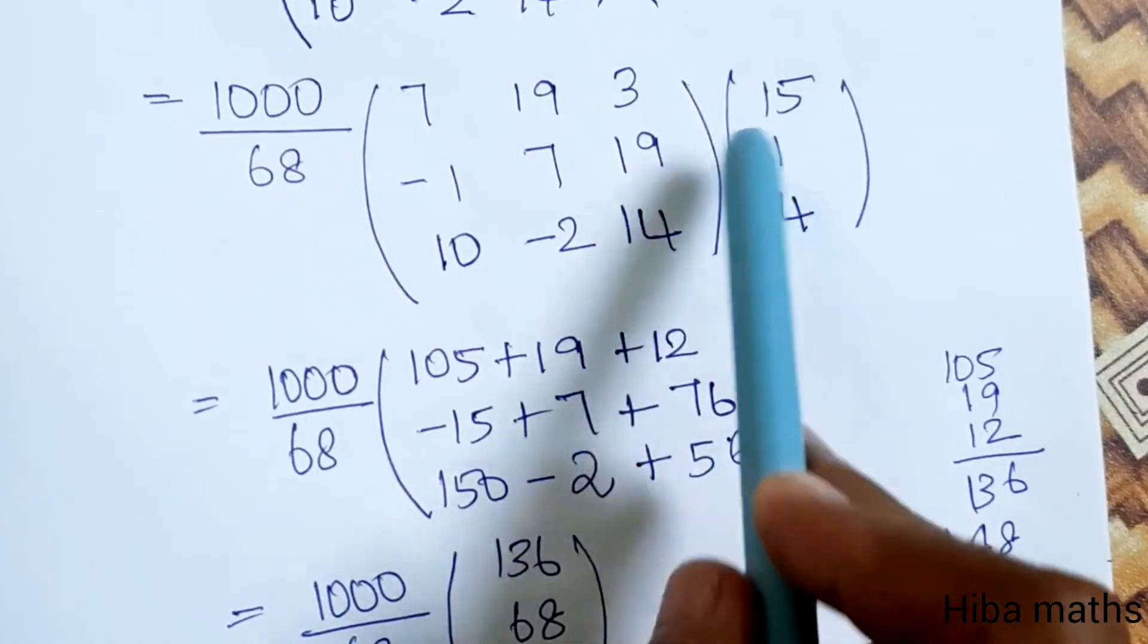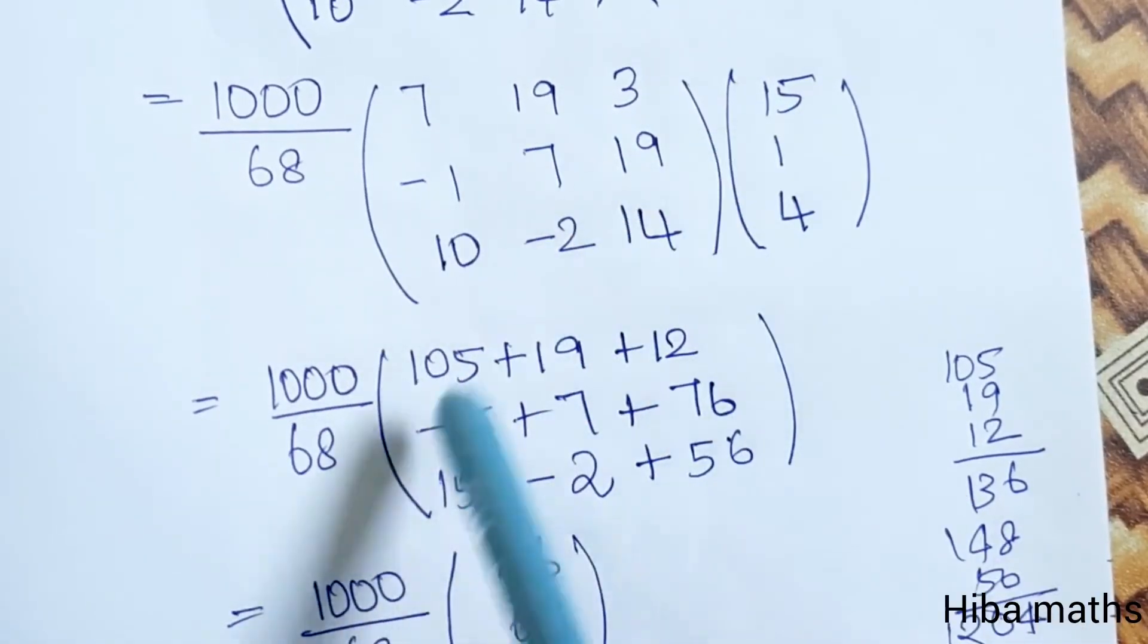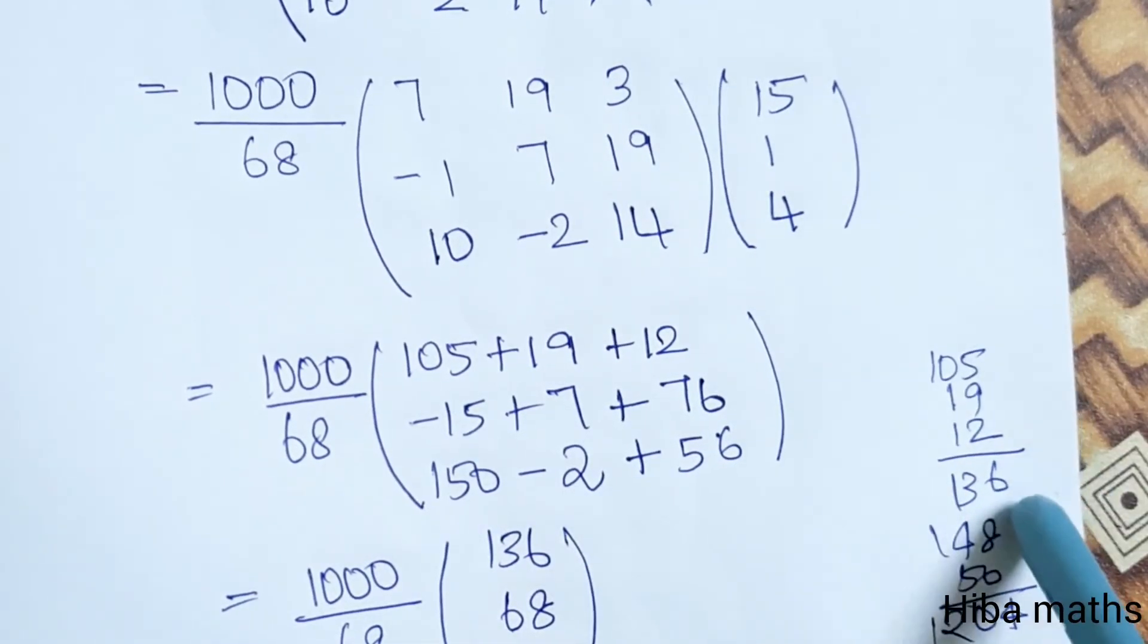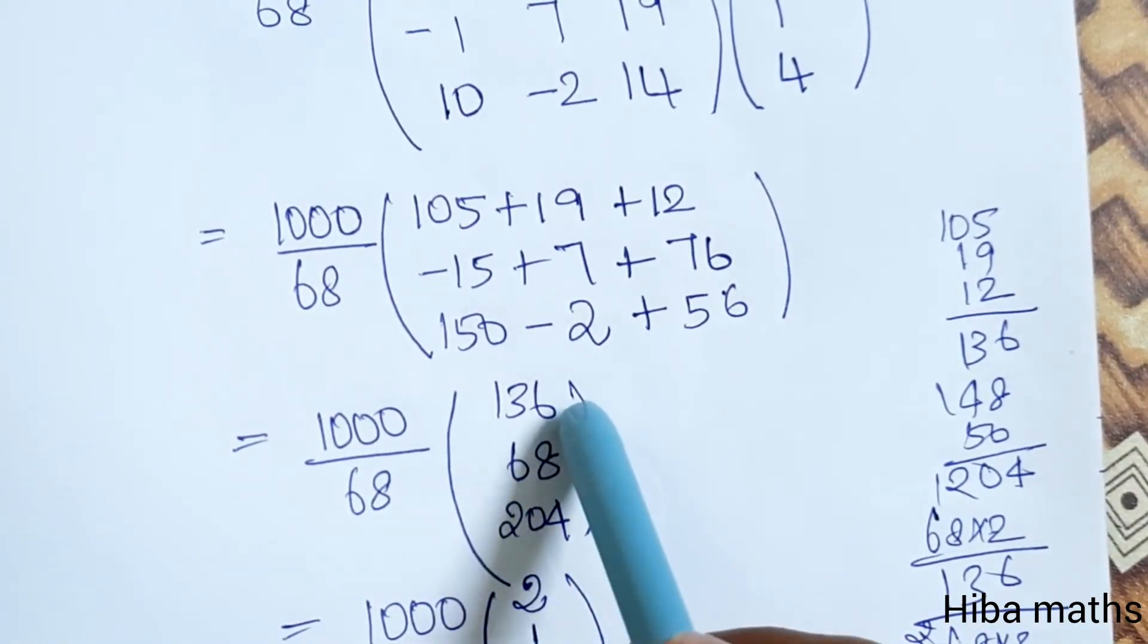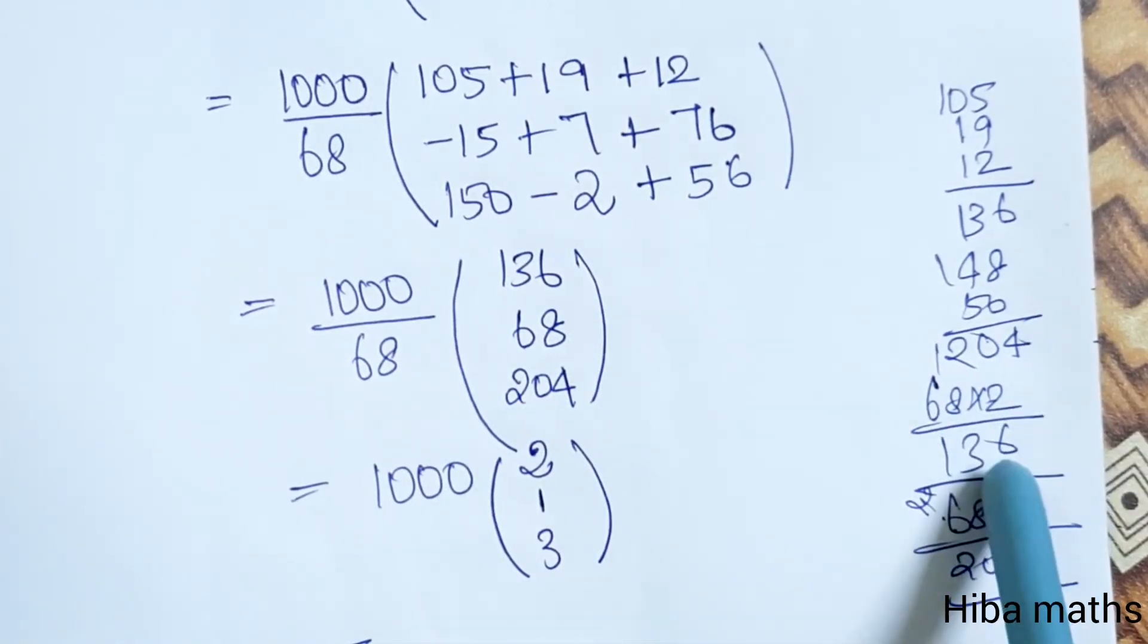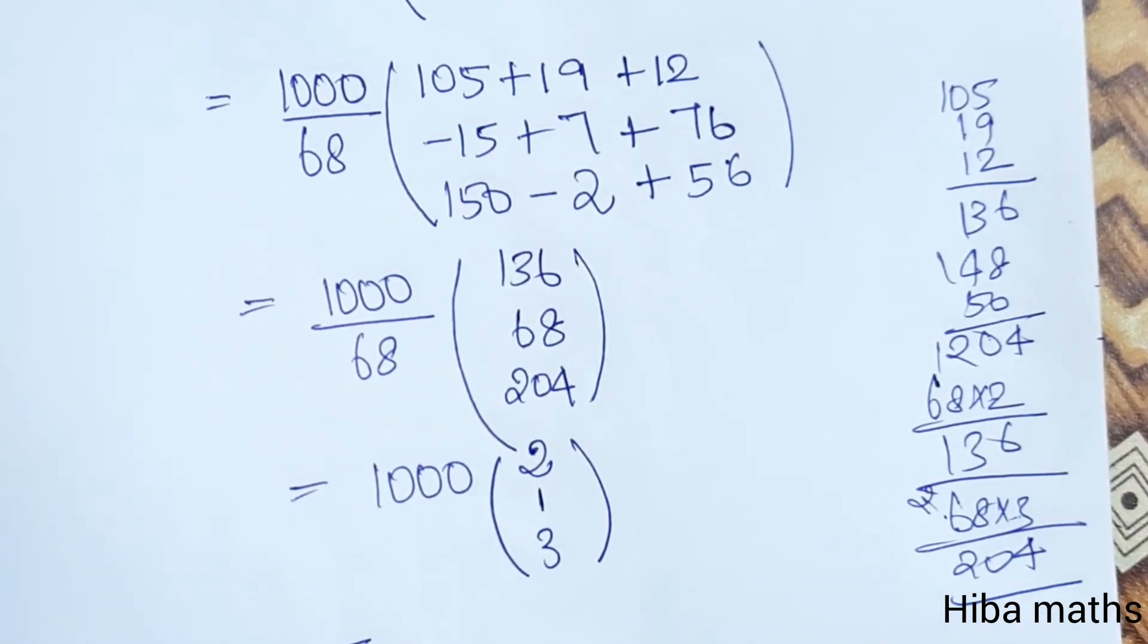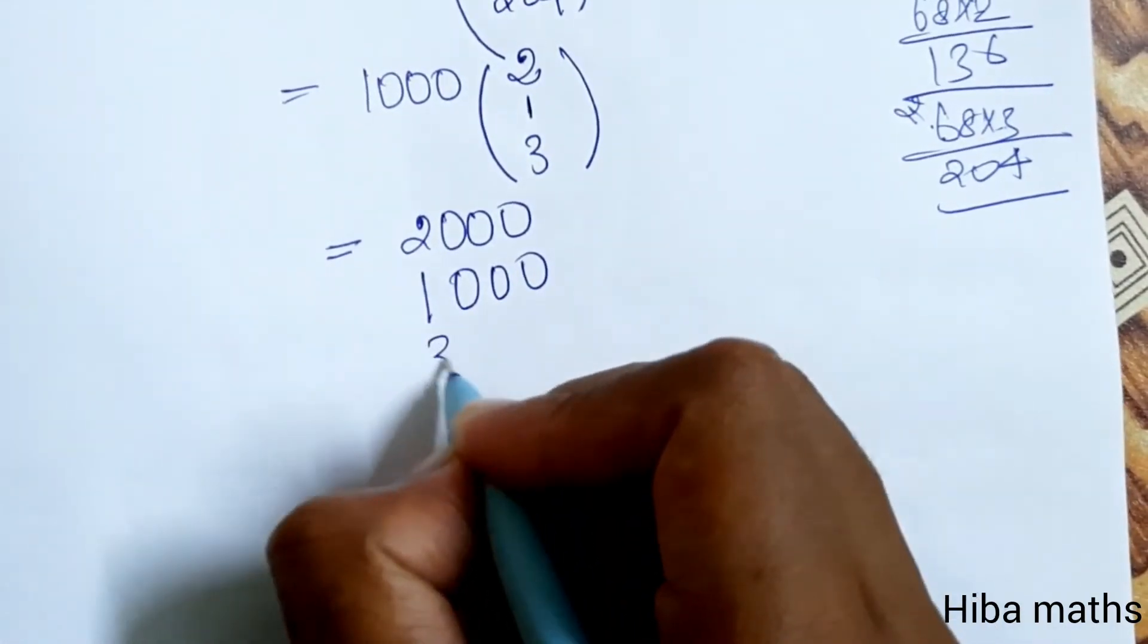Row column multiplication: 7 into 15 is 105, plus 19 into 1 is 19, plus 3 into 4 is 12, total 136. Second: minus 1 into 15 is minus 15, plus 7 into 1 is 7, plus 19 into 4 is 76, total 68. Third: 10 into 15 is 150, minus 2 into 1 is minus 2, plus 14 into 4 is 56, total 204. So 1000 by 68 into 136, 68, 204. This gives 2 times, 1 times, 3 times 1000, which is 2000, 1000, 3000.